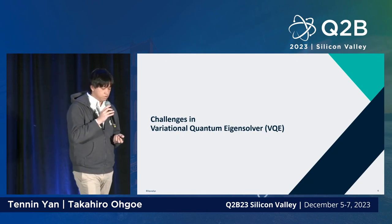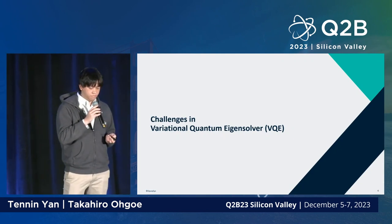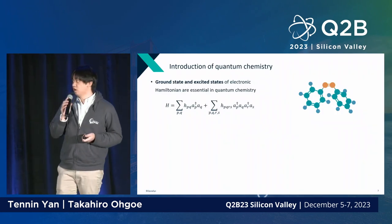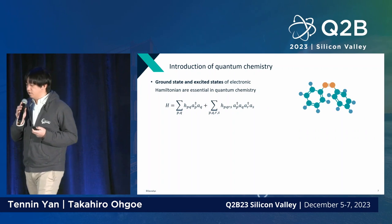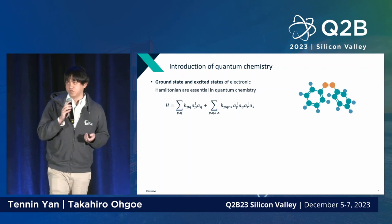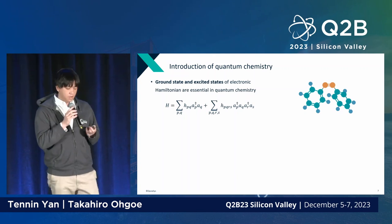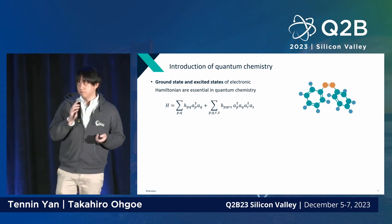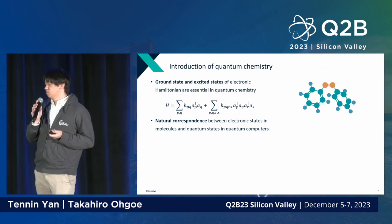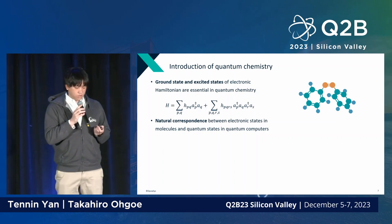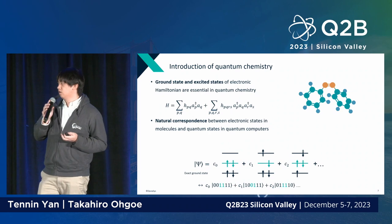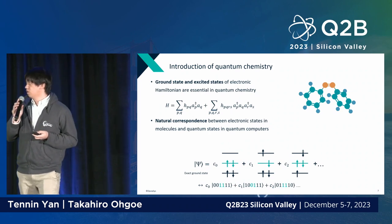Now I'll move to the algorithms research of Qunasis. In quantum chemistry, the basic goal is to understand chemical reactions, which requires understanding the energy of Hamiltonians. Quantum computers are well-suited for this because there is a natural correspondence between electronic states in molecules and quantum states in quantum computers.